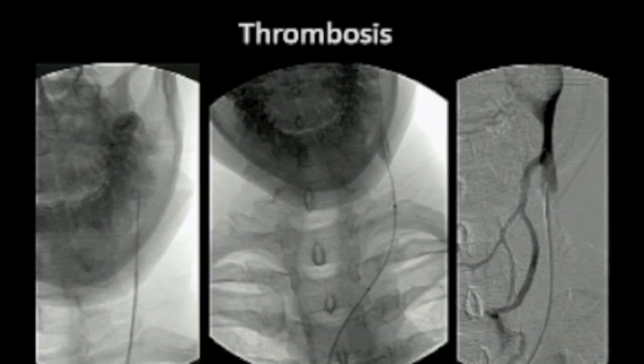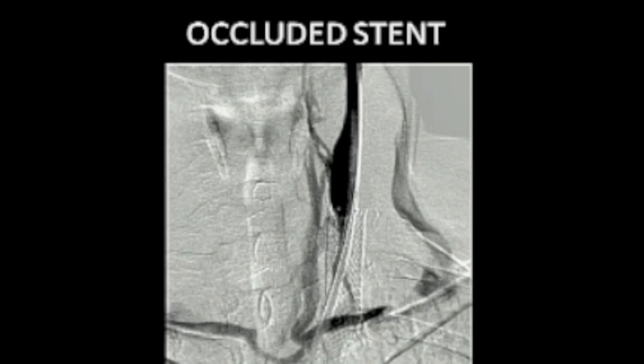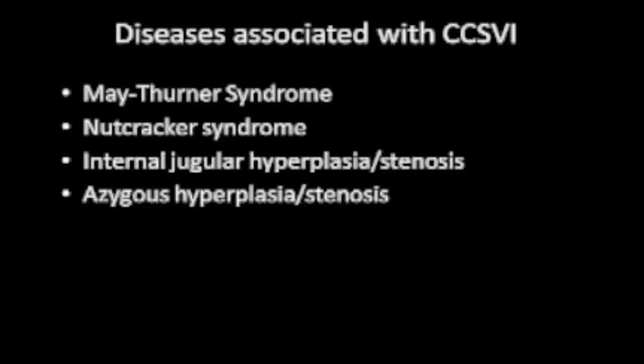Here is one such complication: thrombosis of the internal jugular with collateral vessels, a wire getting through the thrombosis, and shooting a venogram from the thrombosis. Here is an occluded stent as another indication for re-stenting. Diseases associated with CCSVI include May-Turner Syndrome, Nutcracker Syndrome, internal jugular hyperplasia stenosis, and azygous hyperplasia stenosis.